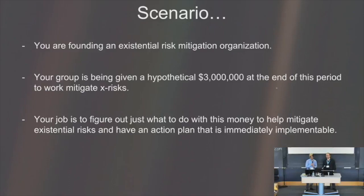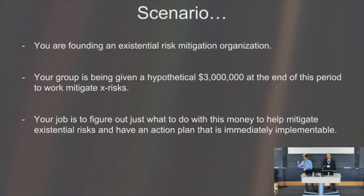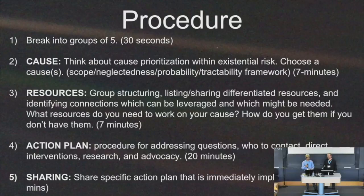Here's what we're going to do: you're going to found a new existential risk mitigation organization today. We're going to be given a hypothetical three million dollars, and at the end of this period, we want you to have a very specific action plan for working through questions and issues in navigating the space. A really crucial consideration is identifying questions — knowing what you know, knowing what you don't know, and identifying unknown unknowns. It's not about solving AI alignment by five o'clock; it's about actionable steps you can take at the end of this workshop as good next steps, given what you know and don't know.